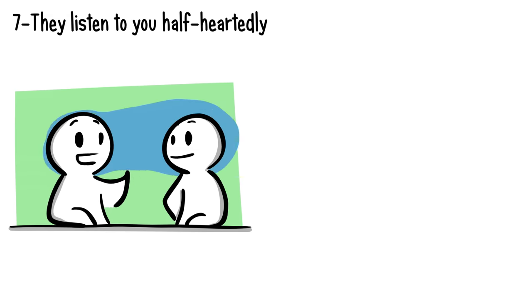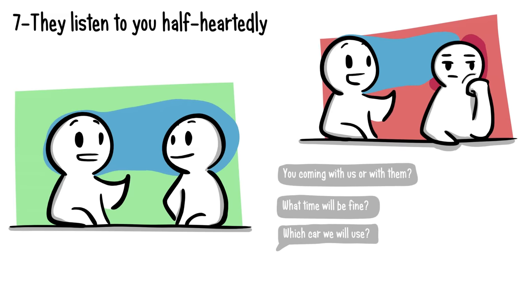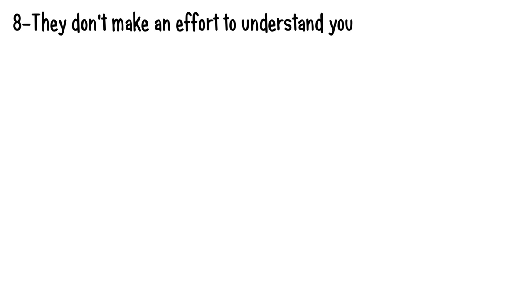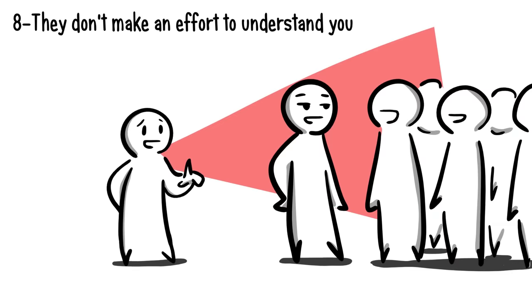Number seven: they listen to you half-heartedly. When we care about someone, we usually do our best to listen to what they say. But if someone is only listening to half of your story and zones out for the rest of it, it's clear they just aren't that invested in you. Other indicators include scanning over your messages instead of fully reading them and giving you only half the answers you need.